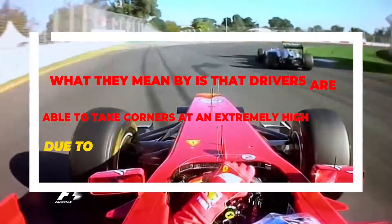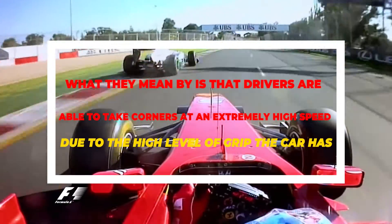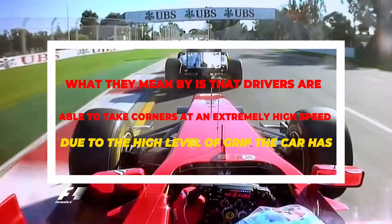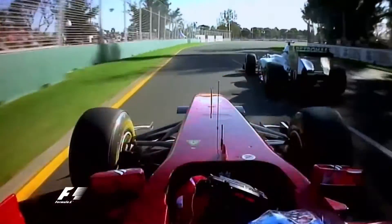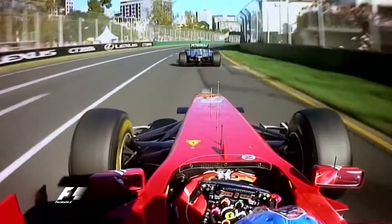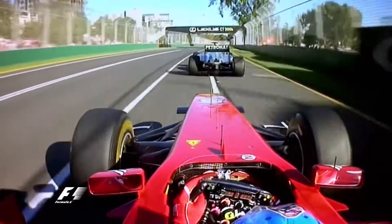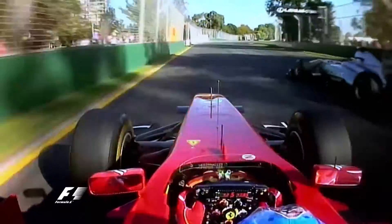What this means is that the drivers are able to take corners at extremely high speeds due to the level of grip the car has. Downforce is a critical factor in achieving this grip. The tires also play an important role, but we'll cover that in a separate video.